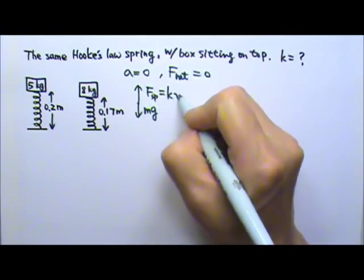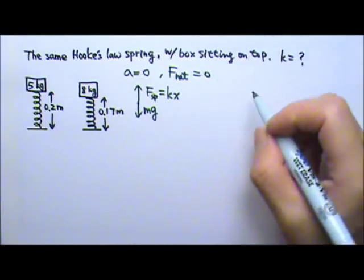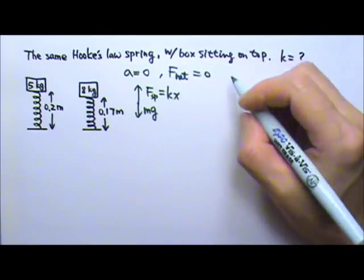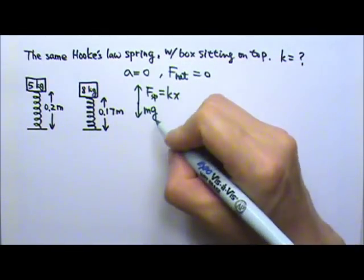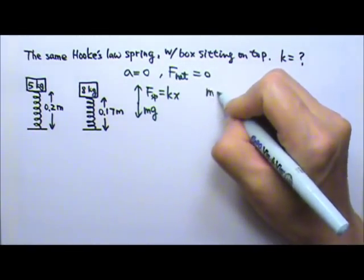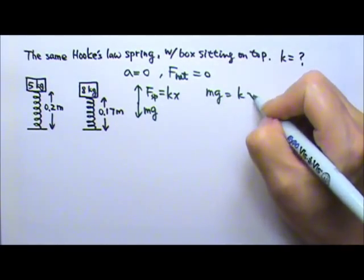This force equals kx. That means the net force is 0, the upward force and downward force are equal, so mg equals kx.